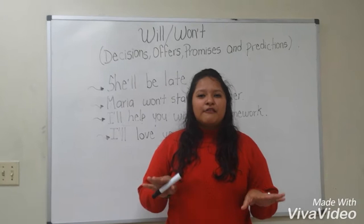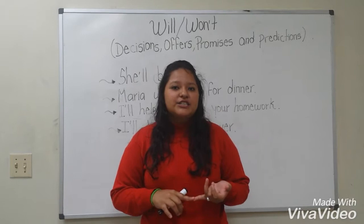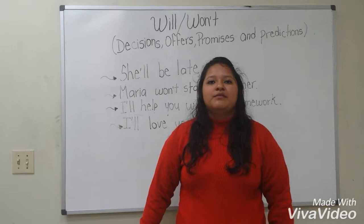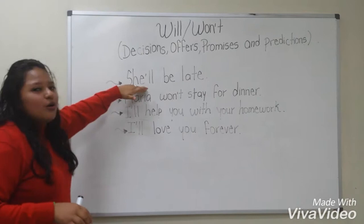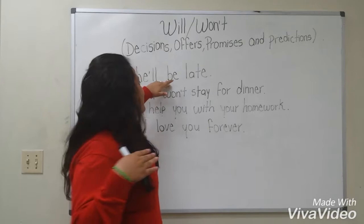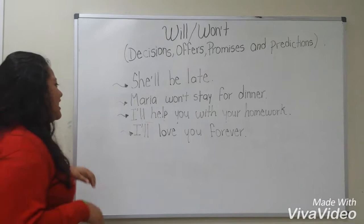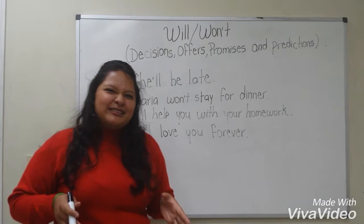Hi, guys. I'm Mr. May. I'm going to give you a review with more examples about will and won't. We use will and won't for decisions, offers, predictions, and promises. For example, if you have a dinner with your girlfriend and your friend, and your friend is pessimistic and tells you, she'll be late — that is a prediction.